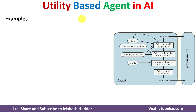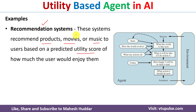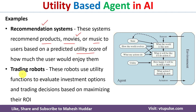Some examples of utility based agents are recommendation systems. In this case the AI agents recommend products, movies, or music to users based on the predicted utility scores. For example, a particular person interested in certain products will have those products recommended because the utility score for those products is higher. If a person is interested in electronics gadgets, the electronics gadgets utility score will be higher so electronics gadgets will be recommended to that user. Similarly, if a person is interested in certain kinds of movies, the utility score for those movies will be higher so such movies will be recommended.